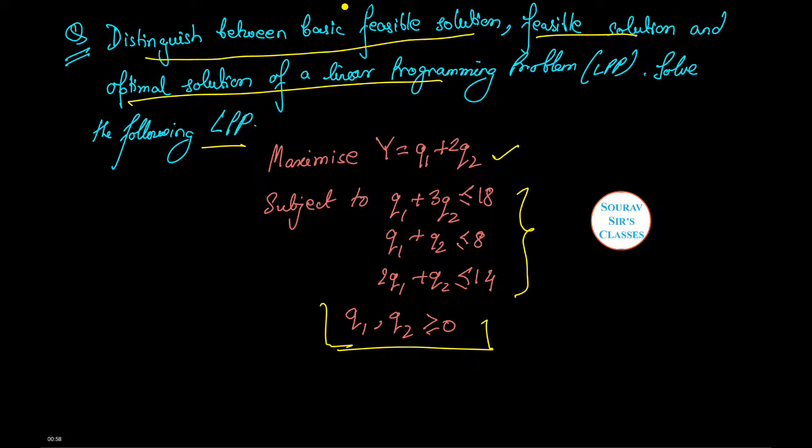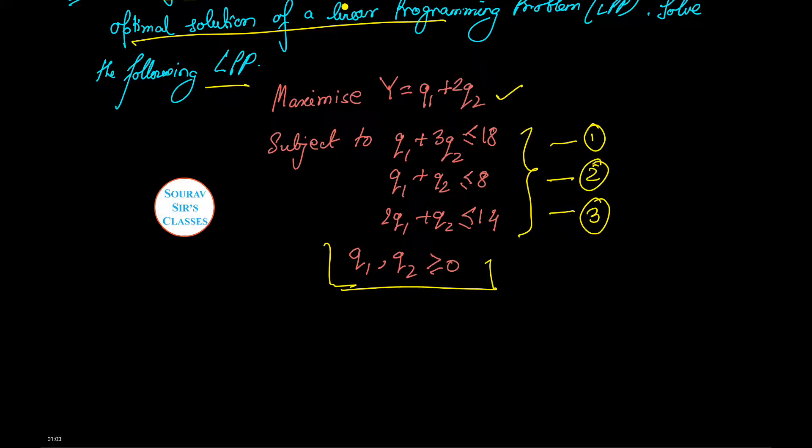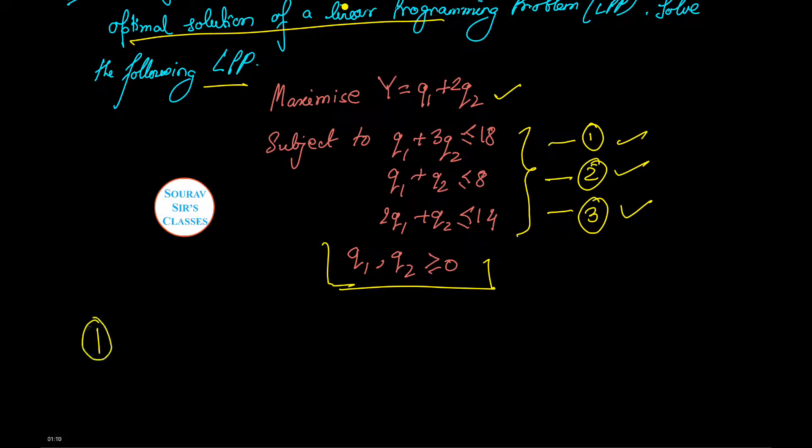Let us see how to do this. Now let us mark all the three constraints as 1, 2 and 3. Now considering equation number 1, we make a table like this Q1, Q2. Now when the value of Q1 is 0 we see the value of Q2 is 6. Similarly when Q2 is 0 the value of Q1 is 18.